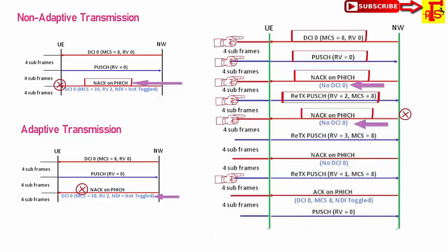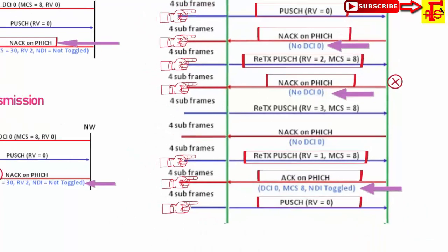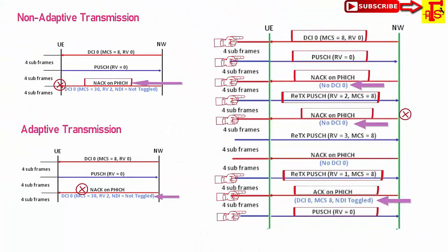Based on the NACK HARQ feedback on PHICH, the UE decides to retransmit. The network again tries to decode the PUSCH packet. If not received correctly, the network provides NACK on PHICH with no DCI-0 information. The UE retransmits the packet on PUSCH with redundancy version 1 and MCS value 8. The network then provides acknowledgement on PHICH along with DCI-0 where NDI bit is toggled, meaning after plus 4 subframes the UE will send a new packet with RV equal to 0.